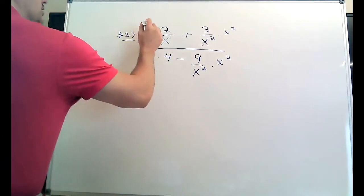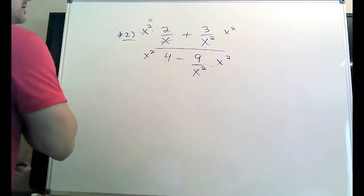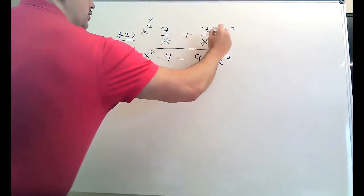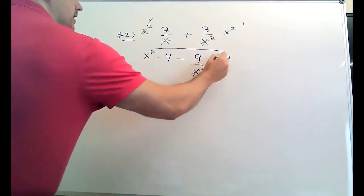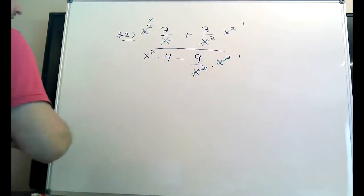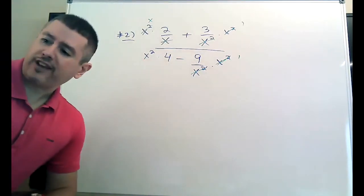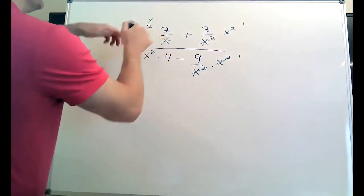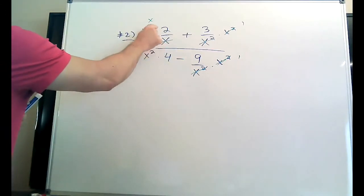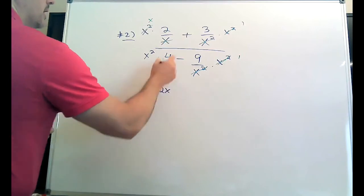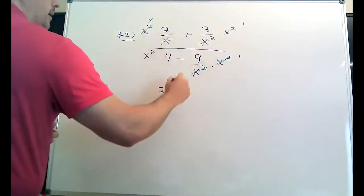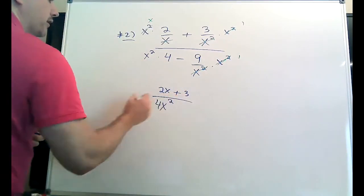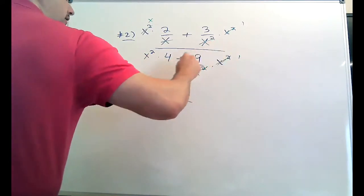So now cross them out. X squared divided by X leaves you with an X — you have X·X on top, X on the bottom, they cross out, you get X. Here they cross out entirely and give you a one. Here they cross out entirely and give you a one. Here there's nothing to cross out — it's not even a fraction. So you have to multiply that X squared by that four. The bottom is gone now. I'm left with two times X, which is 2X, plus three times one, which is three. X squared times four is four X squared.